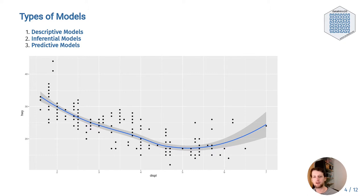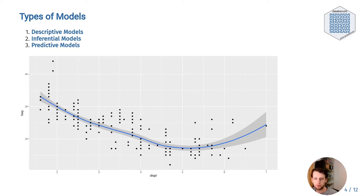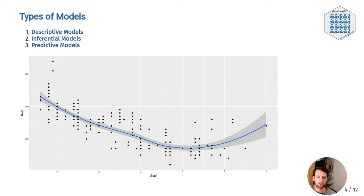Next up are inferential models. They are designed to test hypotheses and make decisions. They rely heavily on assumptions about the data, for example what probability distribution the populations follow, and will most likely be encountered by you to answer research questions. They are the models that typically produce p-values which you can compare to a threshold, like we did last week.